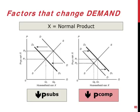In the case of complements, you can think about coffee and cake. If coffee suddenly becomes less expensive, you are able to afford more cake, increasing the demand for cake.